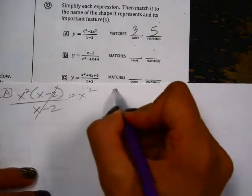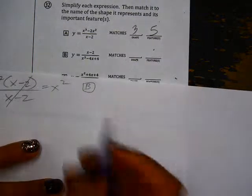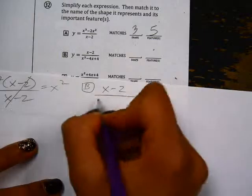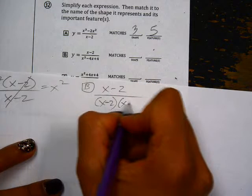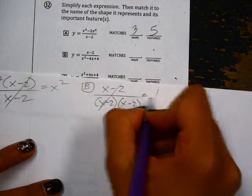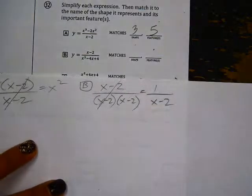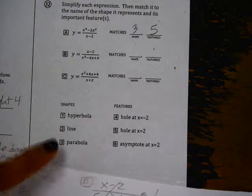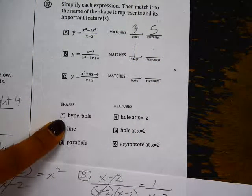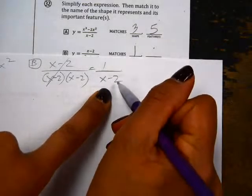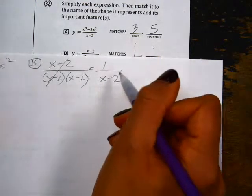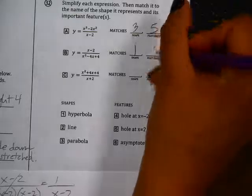Part B, if we factor, we get x minus 2, x minus 2. This leaves us with a hyperbola, which is graph number 1. This hyperbola has an asymptote at 2, which is feature number 6.